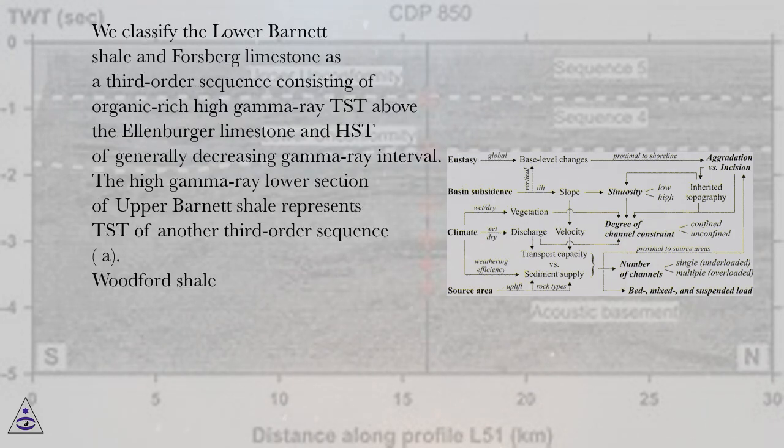We classify the lower Barnett shale and Forestberg limestone as a third-order sequence consisting of organic-rich high gamma-ray TST above the Ellenberger limestone and HST of generally decreasing gamma-ray interval. The high gamma-ray lower section of upper Barnett shale represents TST of another third-order sequence.